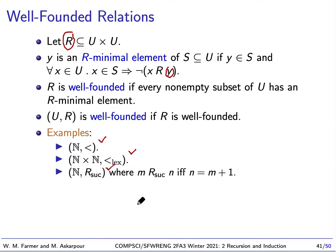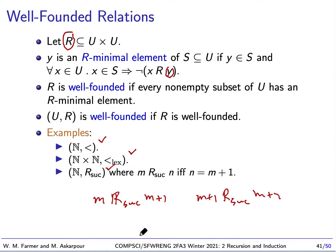The successor relation is not a well-order because it's not an order — it's not transitive. Transitivity would require that if M relates to M+1 and M+1 relates to M+2, then M relates to M+2. But M+1 does not equal M+2, so this is not true.